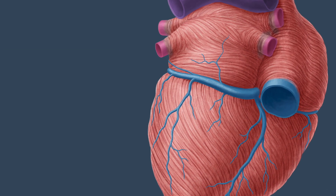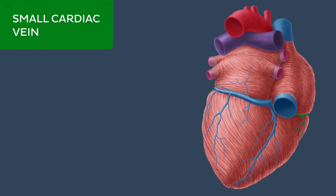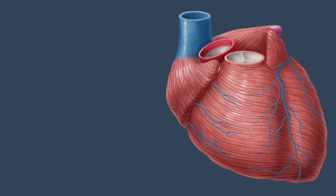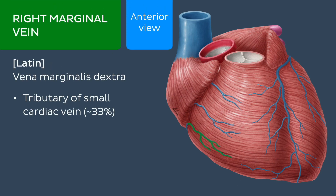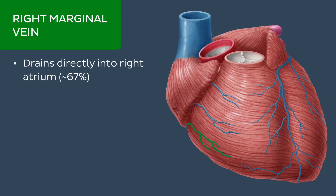The next tributary to the coronary sinus is the small cardiac vein. It can be found in the coronary sulcus between the right atrium and the right ventricle, and it drains the inferior part of the right atrium and right ventricle into the coronary sinus. It should be noted that the small cardiac vein sometimes receives the right marginal vein as a tributary, which we can see here on the inferior margin of the anterior surface of the heart. However, in approximately two-thirds of individuals, the right marginal vein drains deoxygenated blood from the lateral part of the right ventricle directly into the right atrium, rather than via the coronary sinus.